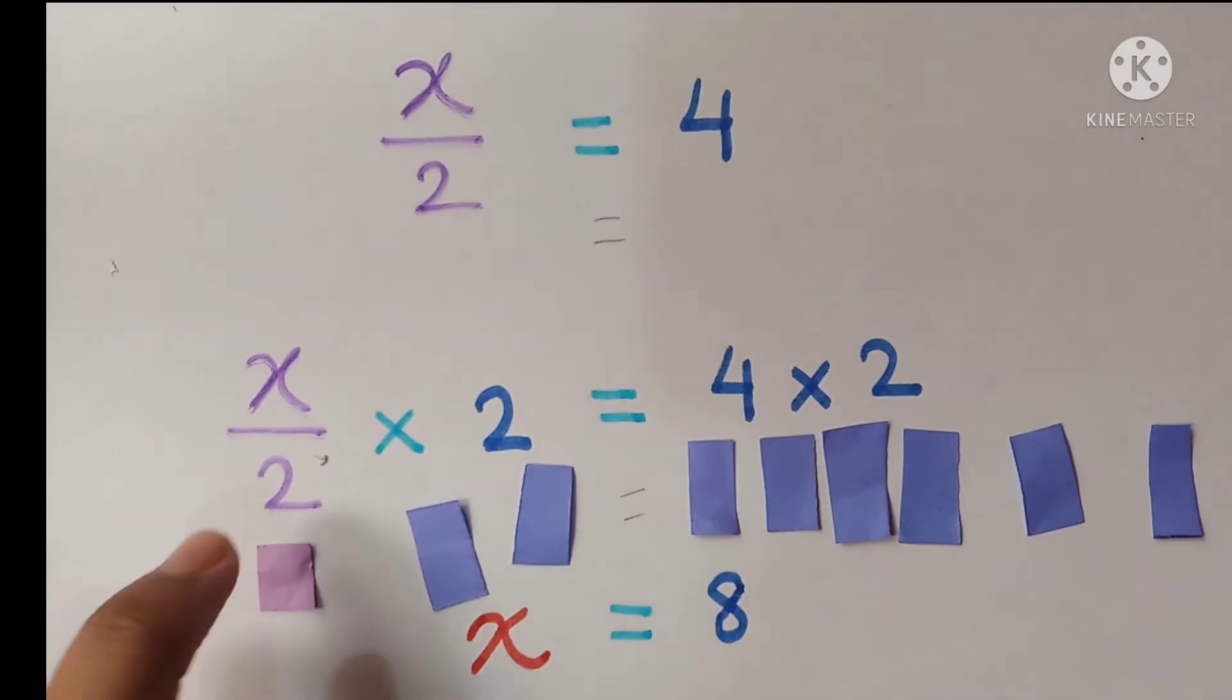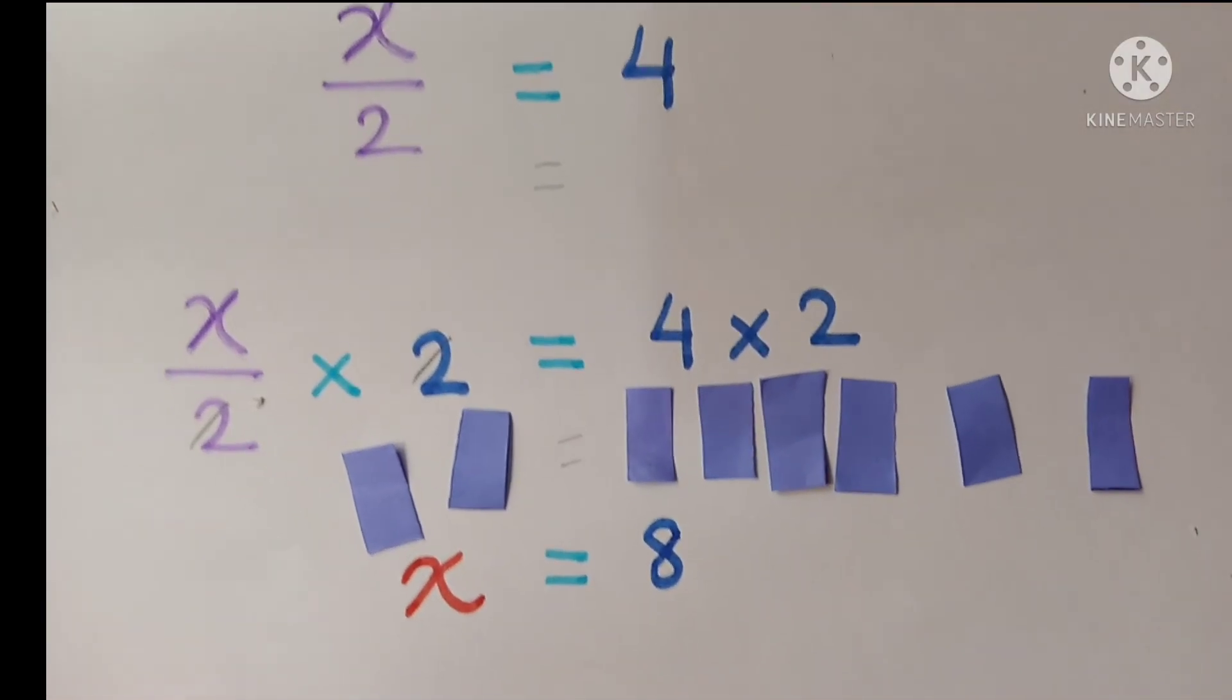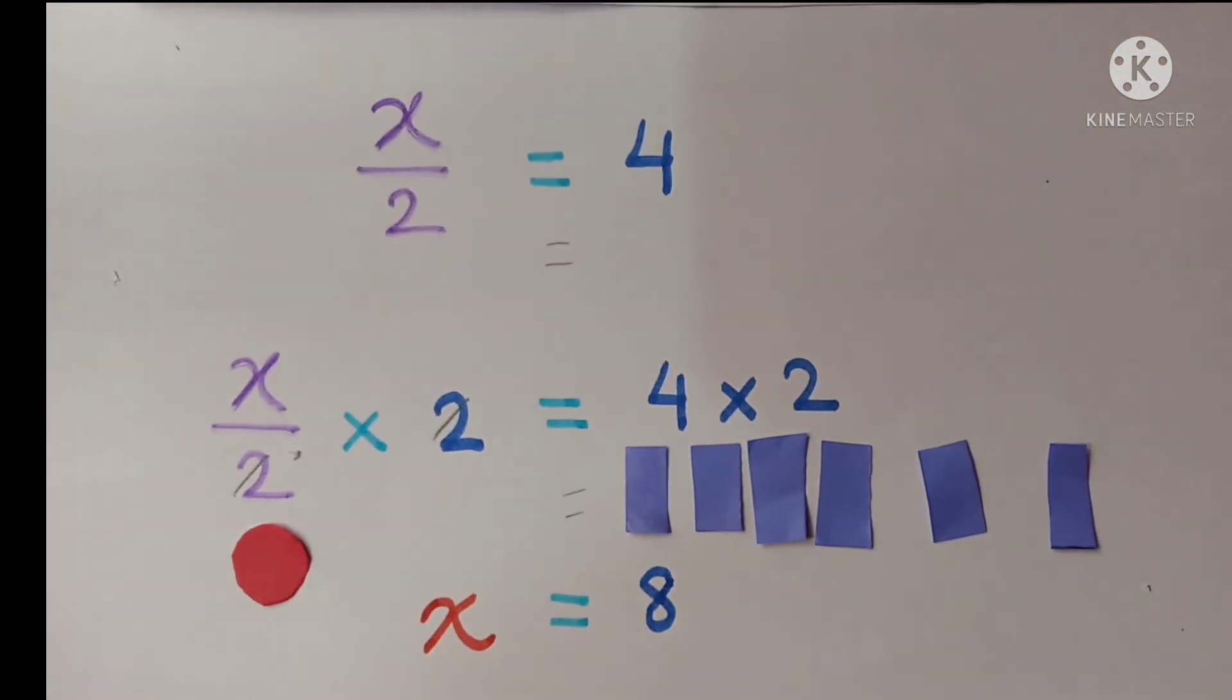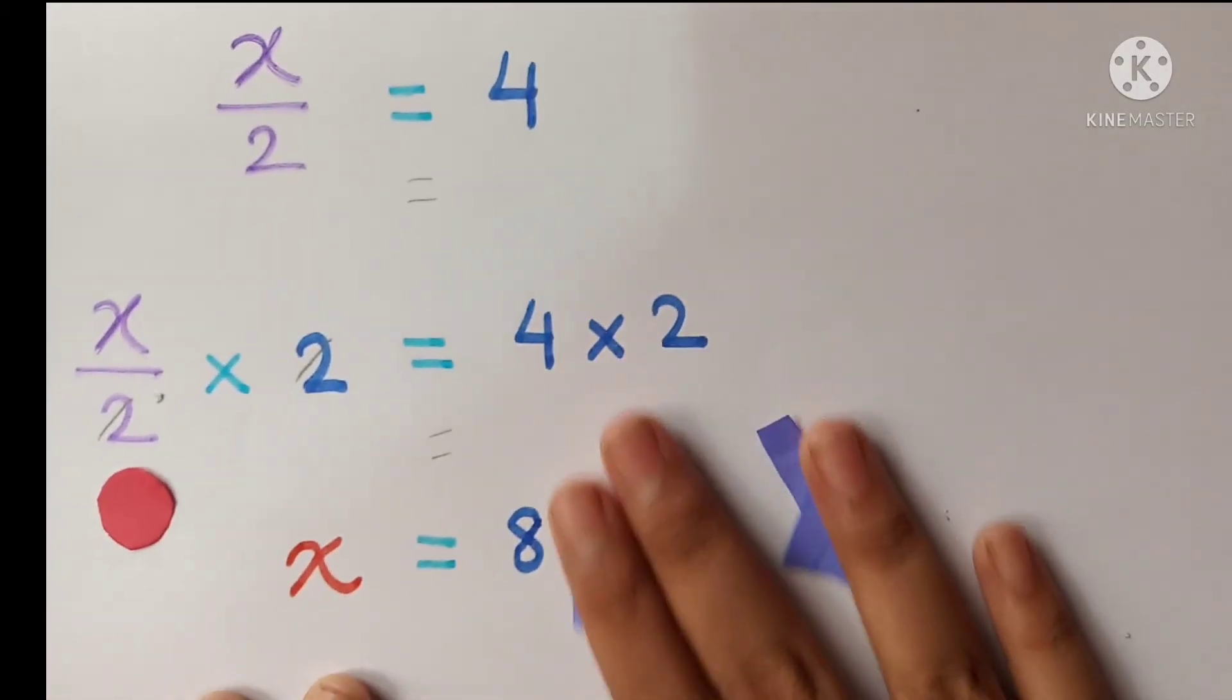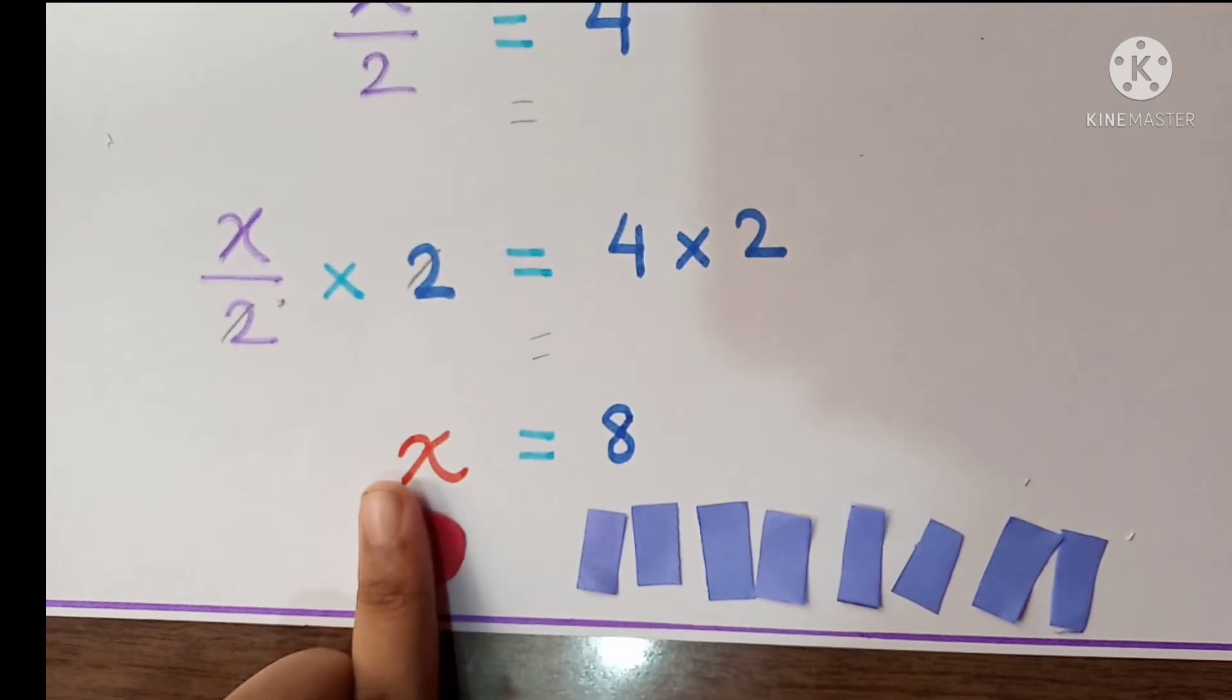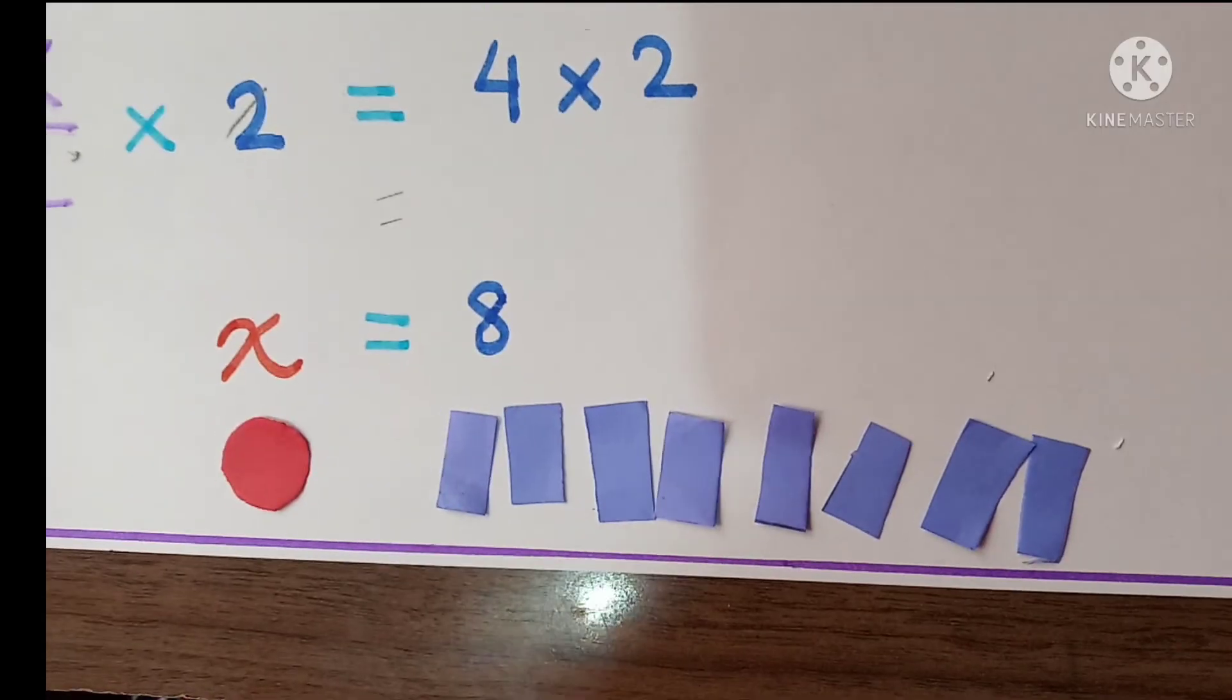So here 2, 2 will be cut here, and here will remain x. Let's remove this and keep our x here. 4 into 2 will be 8. So here let's take 8, it will come here, our 8, and x will come here. So the solution is x is equal to 8. So here our last equation is done.